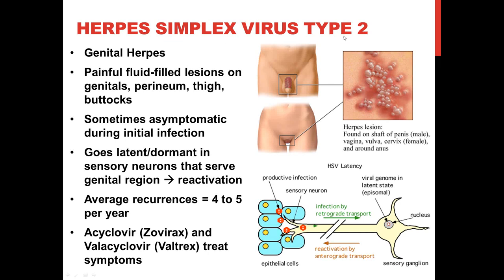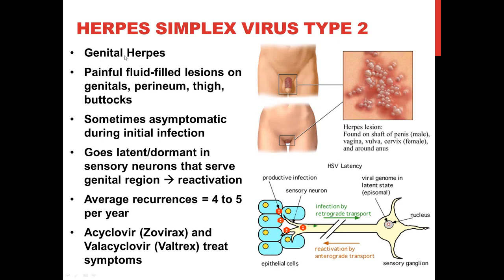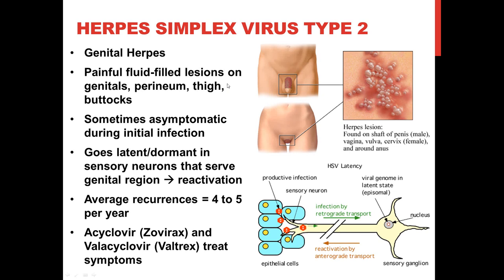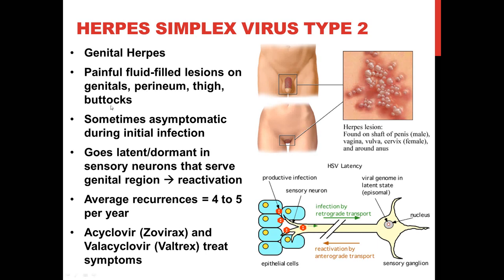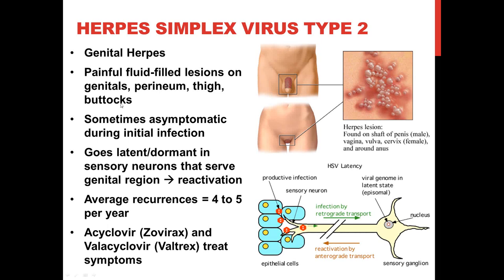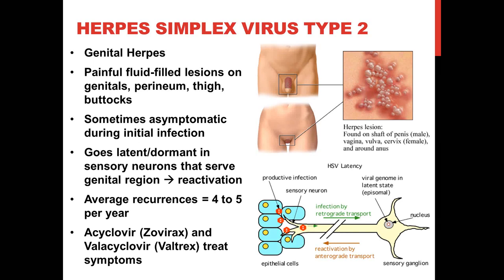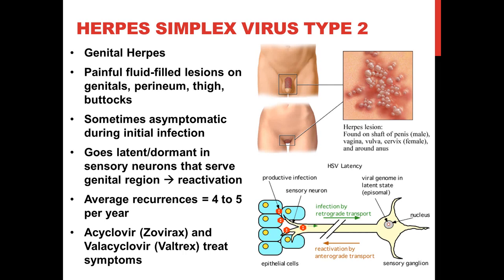Let's talk about herpes simplex virus type 2. This virus causes genital herpes because it infects cells in the skin and on the mucous membranes of the reproductive organs. This can lead to lesions — fluid-filled blisters that are very painful — occurring on the genitals themselves, in the perineum, along the skin of the thigh, around the genital area, and on the buttocks. Viruses go inside your cells to multiply, turning them into little factories that make new viruses. When you see the blisters, that's an indication your immune system has come in to attack the virus and those cells.